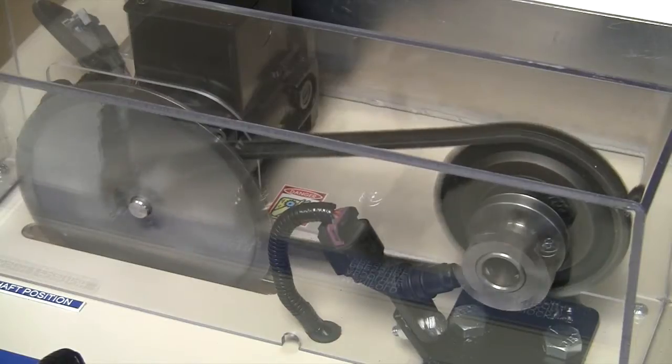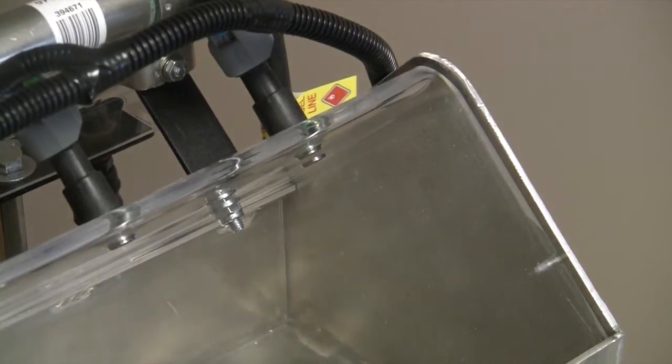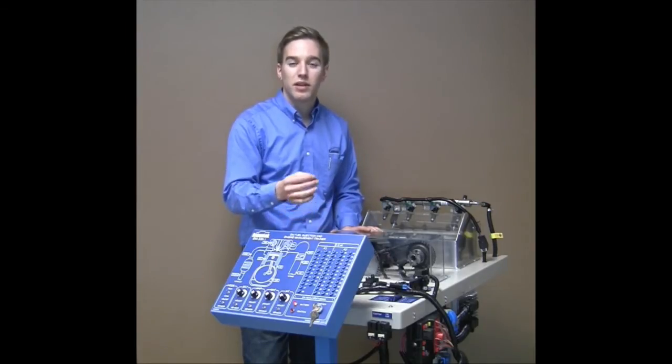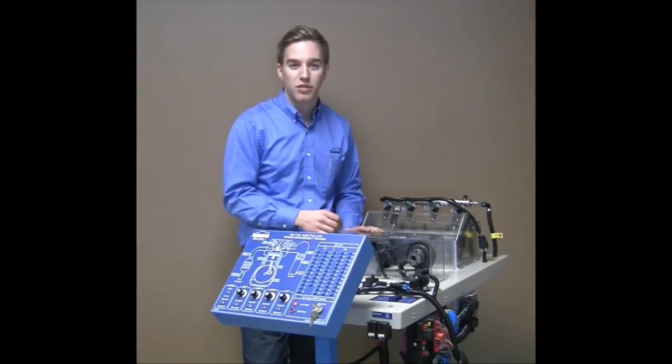Here we have the CAM sensor and crank sensor, as well as the fuel injectors, the four ignition coils as well as spark plugs. Down underneath we have the fuel pump, the fuel tank, as well as the filter and the pressure regulator.